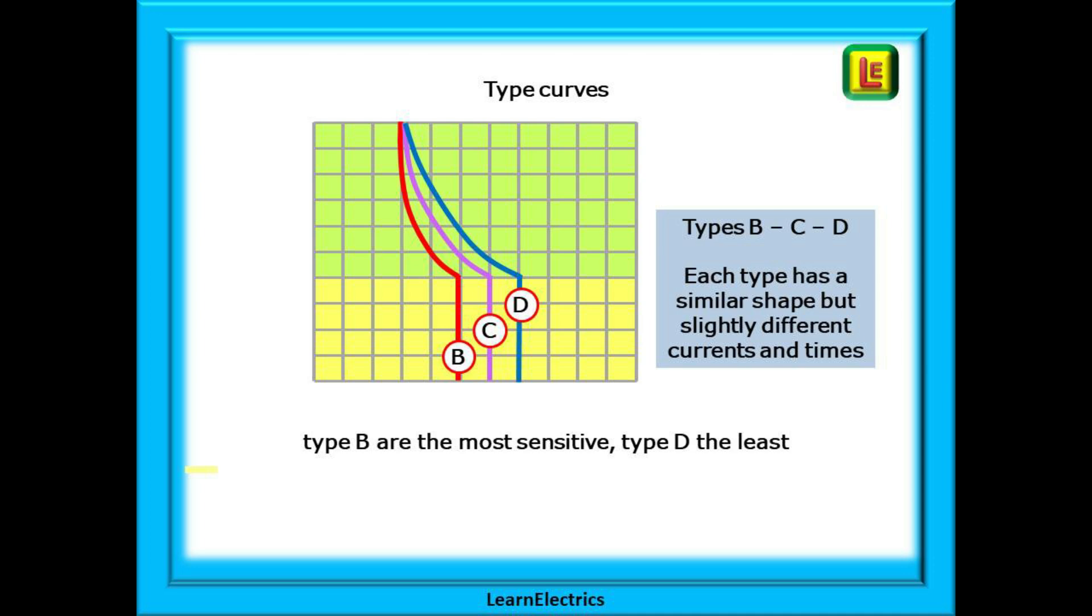The three types of MCB that we are considering in this video are type B, type C and type D.